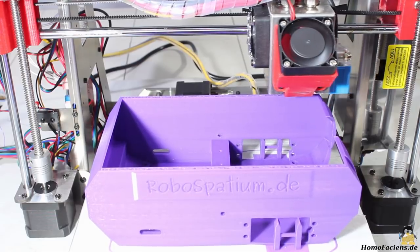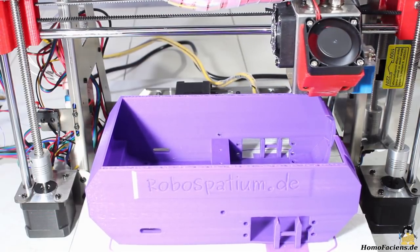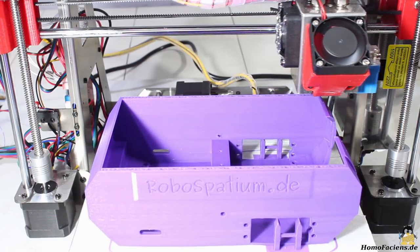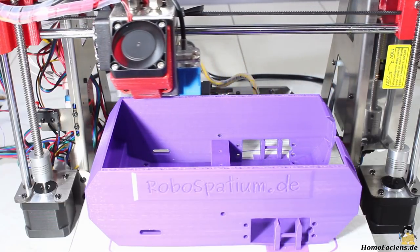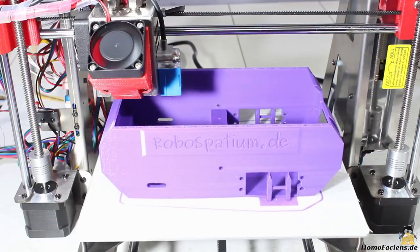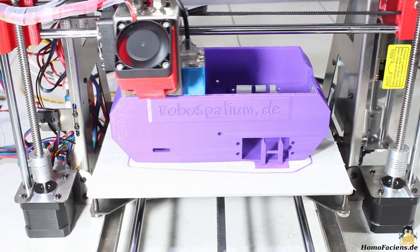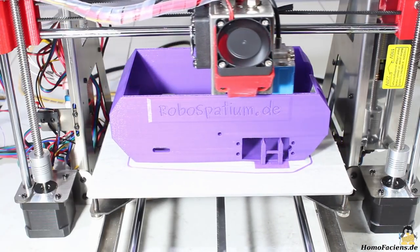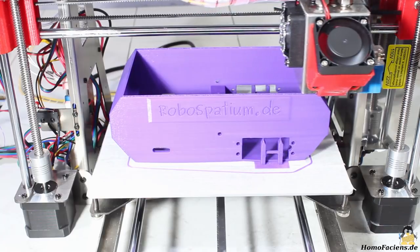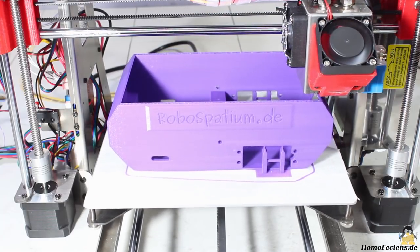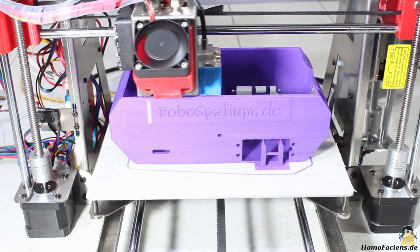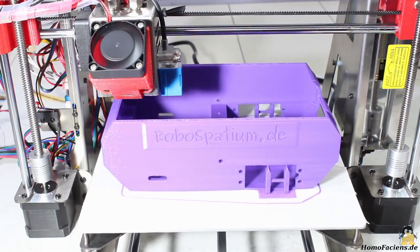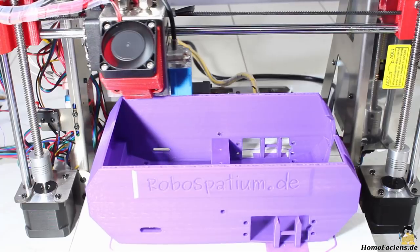With the Zonestar you get a dual extruder 3D printer for a really low price that works, in principle. The print results in single extruder mode are definitely good. The dual extruder operation has its downsides. I'm a big fan of the Prusa i3 clones, since those machines are great to dive into theory and practice of 3D printing. The P802QR2 adds dual extruder functionality to the game.